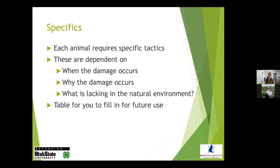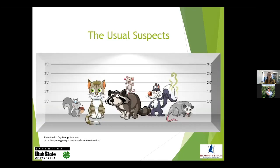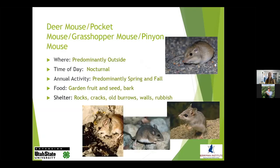I can't go over every single issue or solution in detail, but we're going to look generally at when damage occurs, why it occurs, and what's lacking in the natural environment that's available in your environment. A table is becoming available for you to fill in as we go and use in the future. Knowing what animals are around during the day or night and what types of damage look like can help you figure out what animal you're dealing with. We're going to go over the usual suspects — the ones I get phone calls and emails about throughout the year — going from smallest to largest.